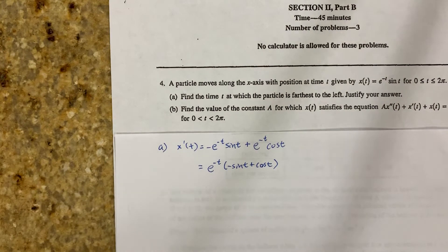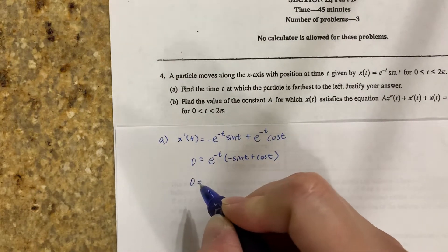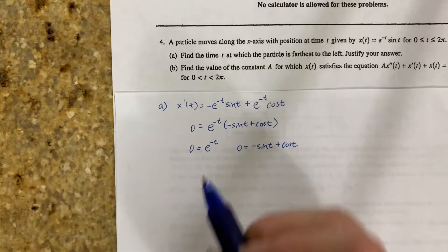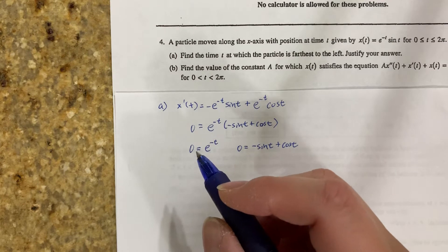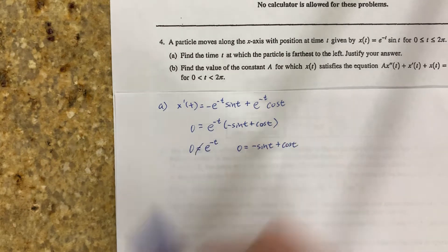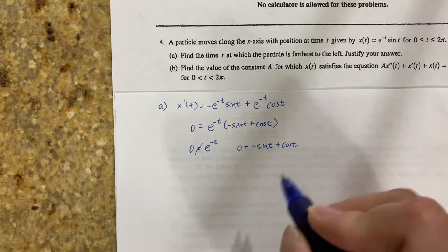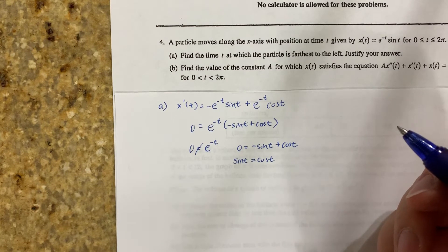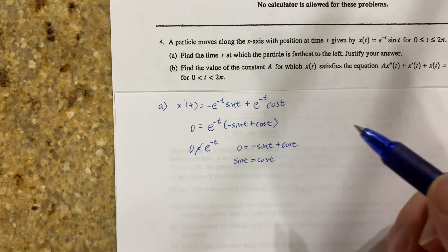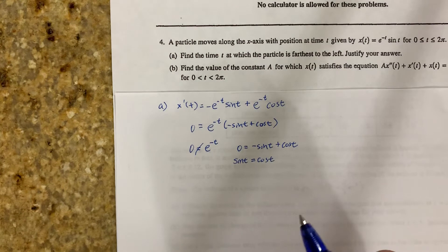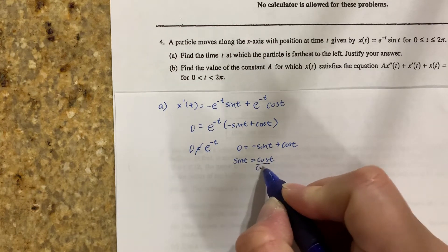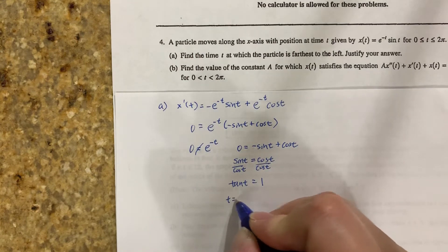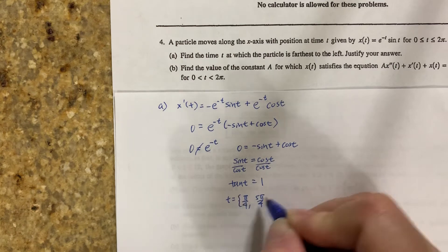Now we set that equal to 0. Splitting it: 0 equals e to negative t, and 0 equals negative sine of t plus cosine of t. e to any power will never equal 0, so our only option is to solve the second factor. Moving sine of t over gives sine of t equals cosine of t. Dividing both sides by cosine of t gives tangent of t equals 1, which is satisfied when t equals pi over 4 and 5 pi over 4.